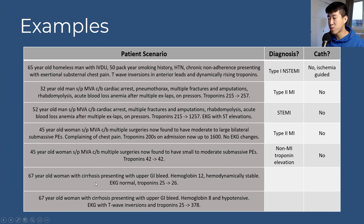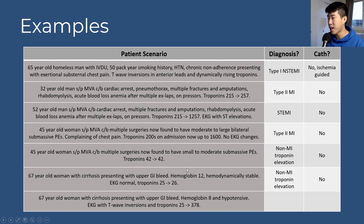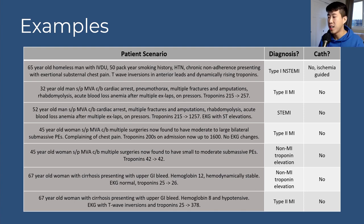Scenario 11: 67-year-old woman with cirrhosis and upper GI bleed, hemoglobin 12, hemodynamically stable, normal EKG, troponins 25 to 26: non-MI troponin elevation, no cath. Same patient but hemoglobin 8 and hypotensive with EKG changes and more dynamic troponin rise: type 2 MI. Even if ACS is possible, they are acutely bleeding — manage as type 2 MI, treat the underlying condition, no catheterization.